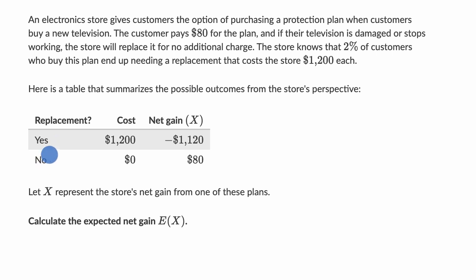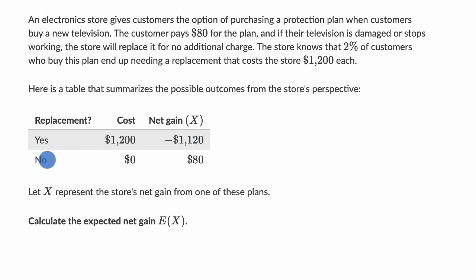So we have two scenarios. The first scenario is that the store does need to replace the TV because something happens, and so it's going to cost $1,200 to the store. But remember they got $80 for the protection plan, so you have a net gain of negative $1,120 from the store's perspective. The other scenario, which is more favorable for the store, is that the customer does not need a replacement TV, so that has no cost, and their net gain is just the $80 for the plan.